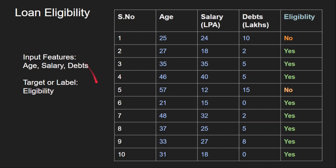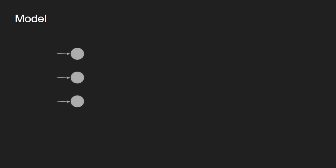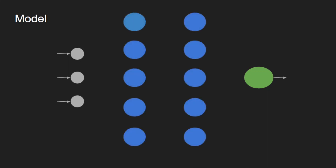Since we have three input features — age, salary, and debts — we need three neurons in the input layer. For the output, we are expecting a probability score, so we keep only one neuron in the output layer. For the hidden layers, we are using two hidden layers with five neurons each for simplicity. The decisions for the number of hidden layers are heuristic, and we expect this network to be good enough for solving the problem.